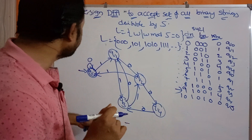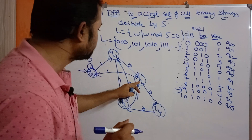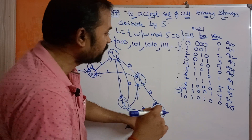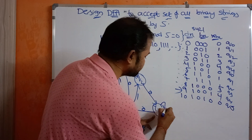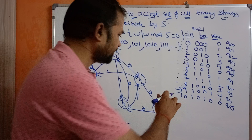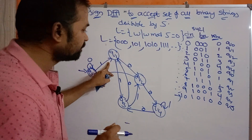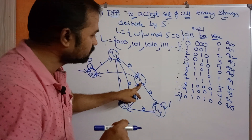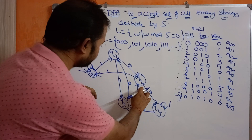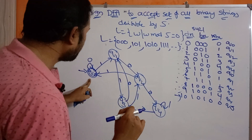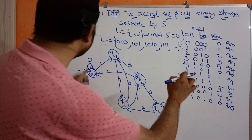For 9 (1001): q0 on 1 → q1, q1 on 0 → q2, q2 on 0 → q4, q4 on 1 → q4 (self-loop on 1 at q4). For 10 (1010): q0 on 1 → q1, q1 on 0 → q2, q2 on 1 → q0, q0 on 0 → q0, reaching the final state.